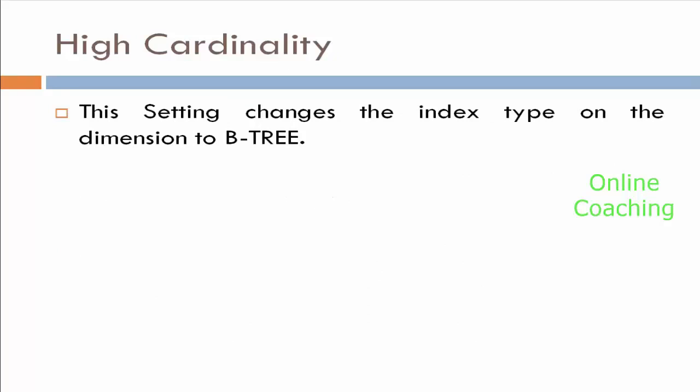Then what happens? The setting changes the index type on that particular dimension from bitmap to B-tree index. The size will decrease a little bit and retrieval performance will increase — it will be improved. This is the use of high cardinality. They are going to ask in an interview: why do we need to set up a dimension for high cardinality? Basically, in an InfoCube, any dimension contains a bitmap index. If the dimension table size is more than 20% of the fact table size, then set that dimension as high cardinality, which changes the index type from bitmap to B-tree index. This is the advantage and the answer.